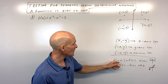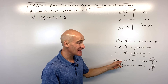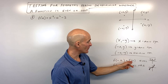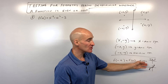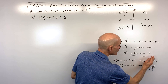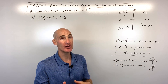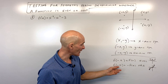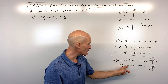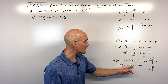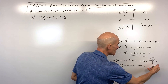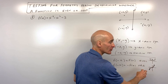For the even/odd test, you substitute negative x in place of x. If you get the original function back, the function is even, which means it's symmetric about the y-axis. If you get the original function back multiplied by negative one — the opposite of f(x) — then the function is odd, meaning it's a rotation 180 degrees about the origin.